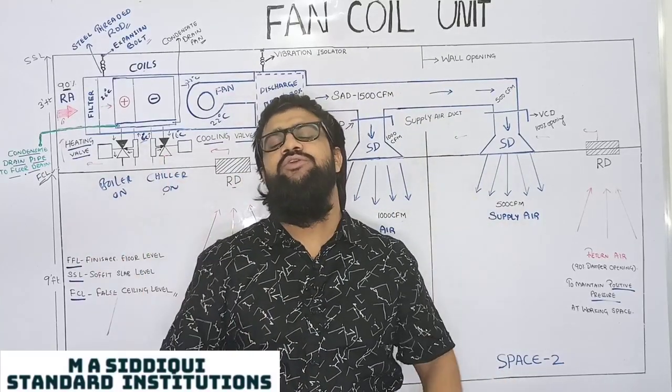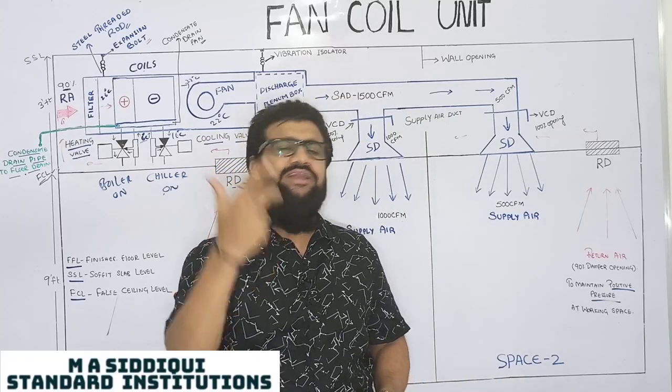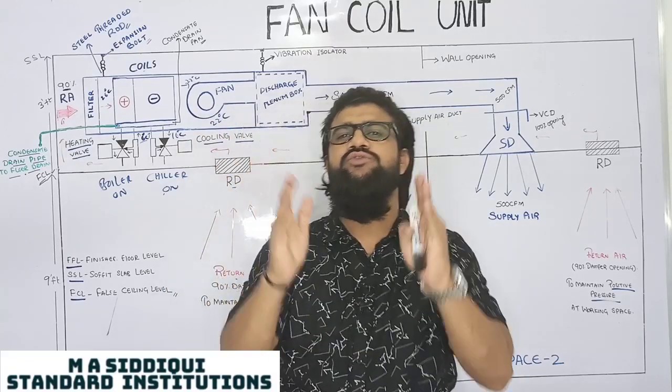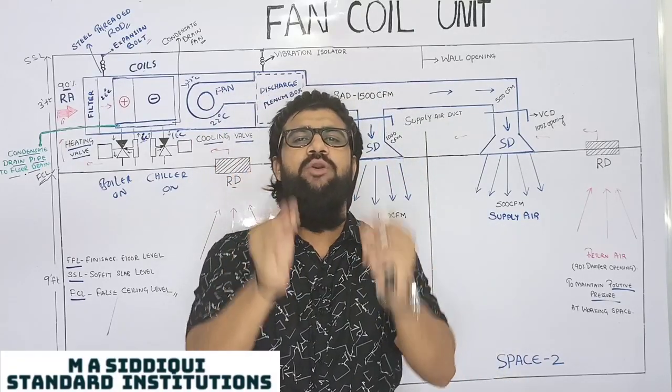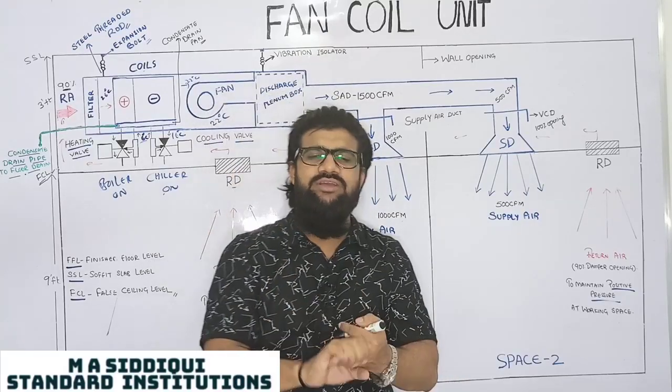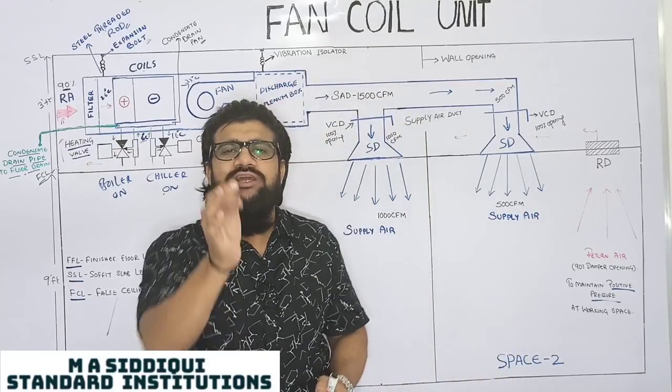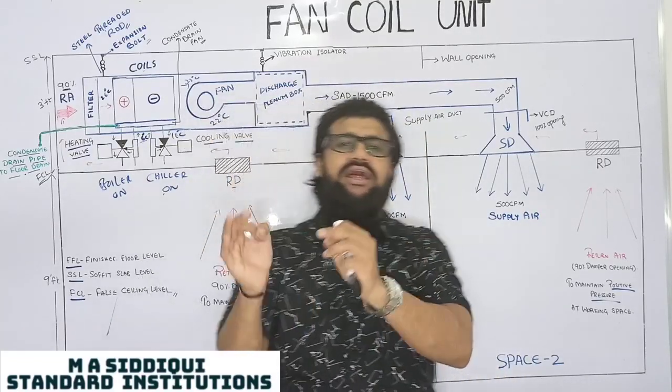As the name itself suggests, FCU will be having three components. One is the fan, second is the coil, third is the filter. FCUs are used for small spaces such as apartments, 2BHK flat, 1BHK flat, whereas air handling units are used to circulate the air in large spaces.